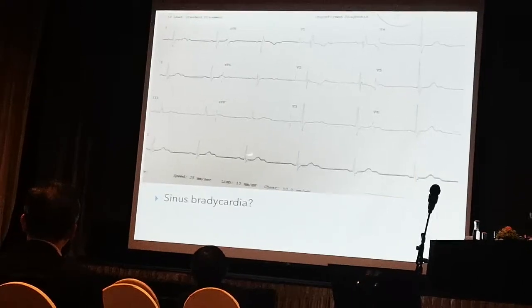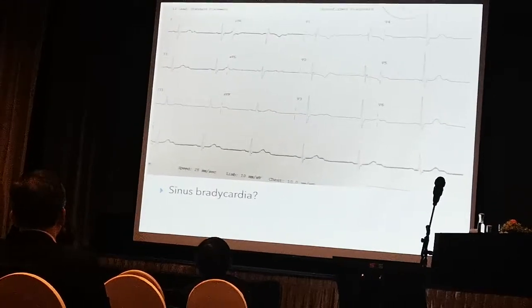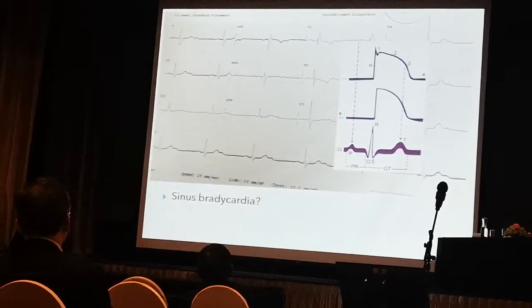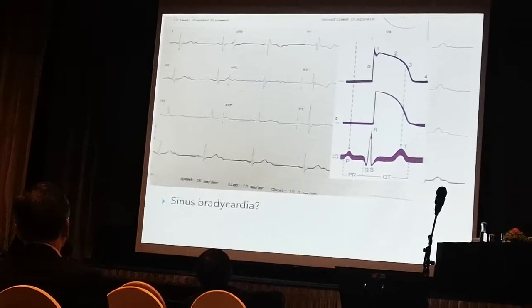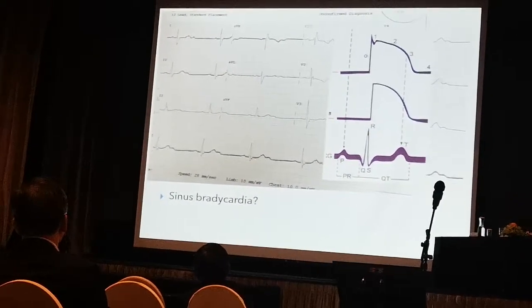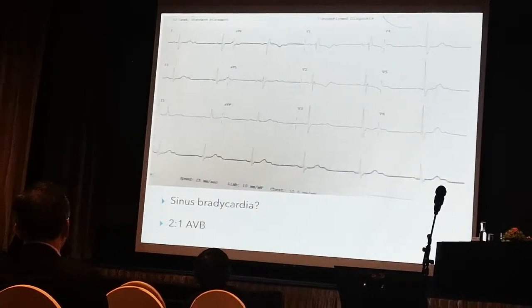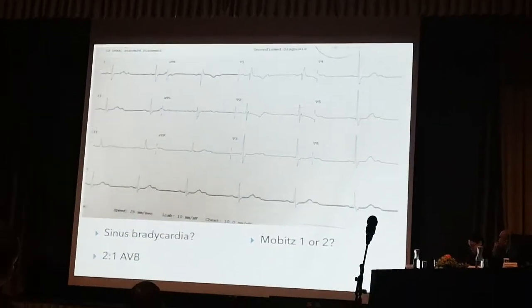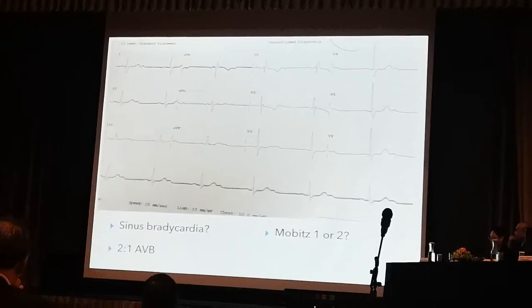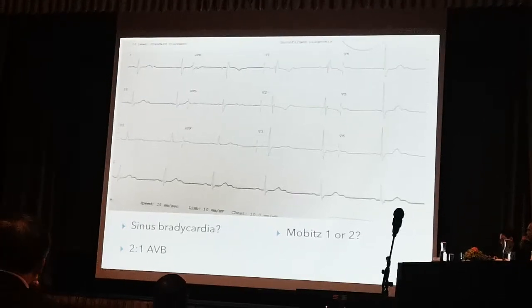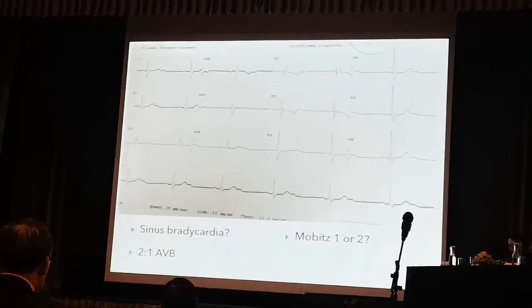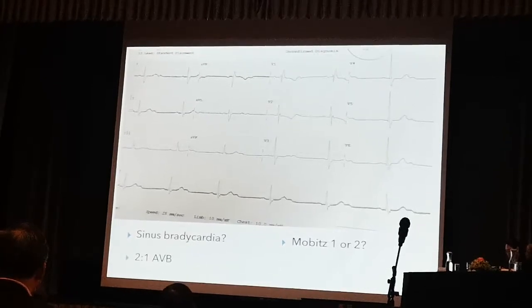If you count the P-waves, you will realize that it's actually a 2-to-1 heart block — a 2-to-1 AV block. So my next question, which is commonly asked, is: is this Mobitz Type 1 or Mobitz Type 2? Let's go back to Mobitz Type 1 and Mobitz Type 2 again.